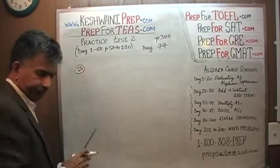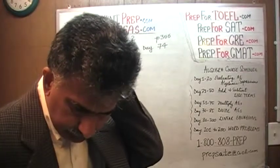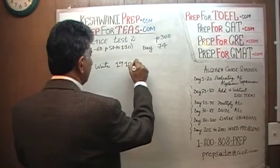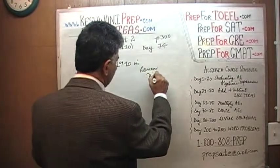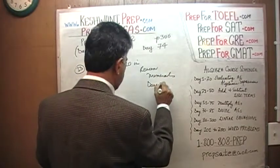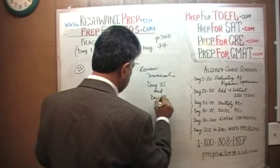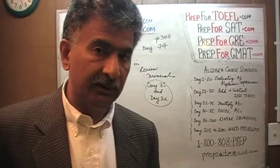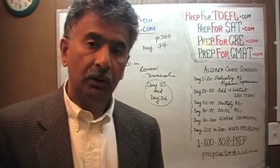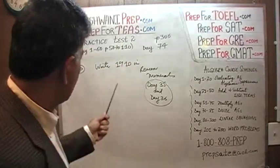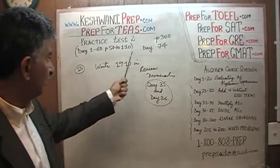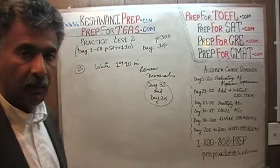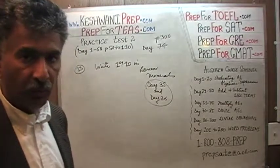Number 13. They're asking us to write 1910 in Roman numerals. As I've been reminding you since day number 61, from day 61 through day 70 we did practice exam number one, and now we're doing exam number two. You must make sure you watch the first 60 videos — day one through 60 — where we learn all the material from page 50 through 110. On day 35 and 36 is where we learn how to convert Roman numerals into Arabic numerals and vice versa. Make sure you watch those videos.